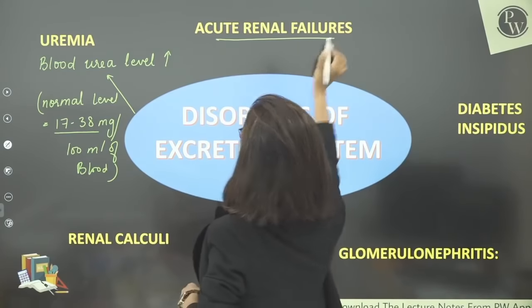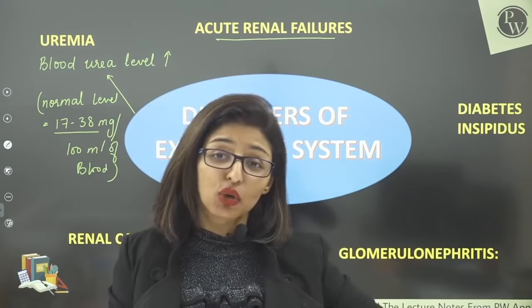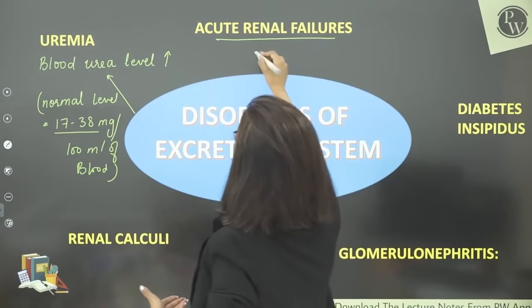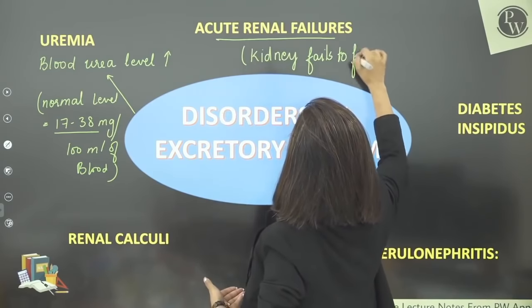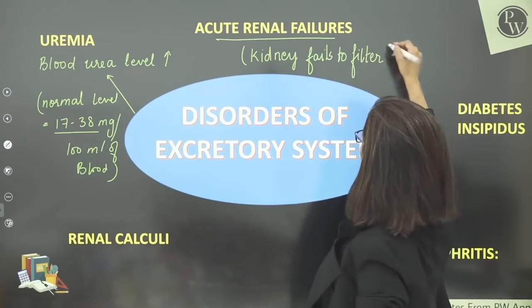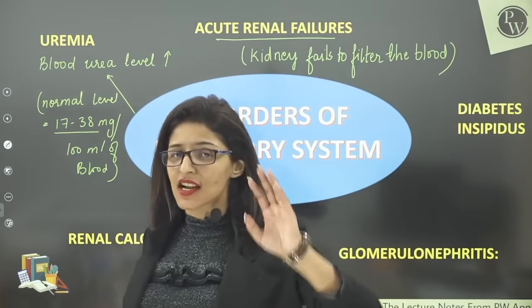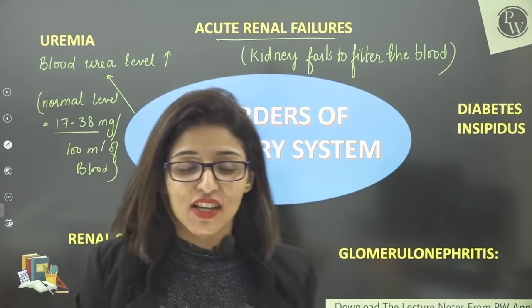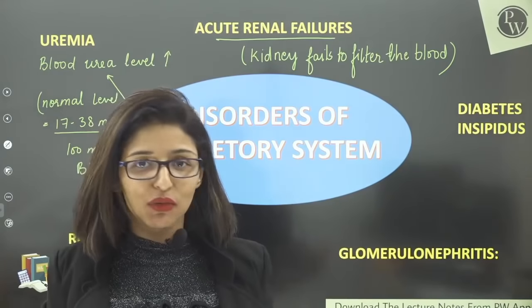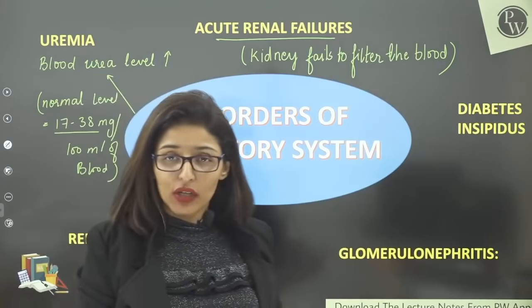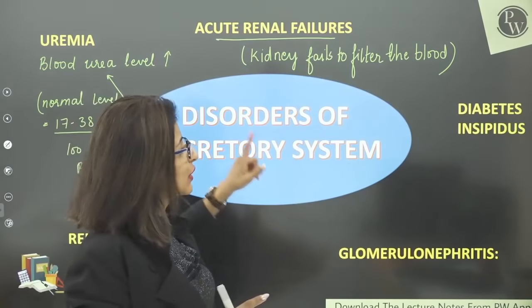So, acute renal failure. The word 'acute' means it has appeared suddenly. There are two terms: chronic and acute. Acute means what has come on suddenly. Renal failure means kidney failure — the kidney fails to filter the blood. In such a situation, a lot of toxicity accumulates in the blood. Without a kidney, guys, even a packet of chips can kill us. So we need to bring an alternative. In kidney failure, either we need a kidney transplant, but kidneys are not available in the market, so until a suitable donor is found, we have another alternative — the artificial kidney.